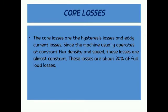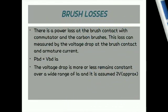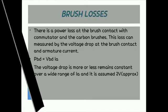Brush losses — there is a power loss at the brush contact with the commutator and the carbon brushes. This loss can be measured by the voltage drop at the brush contact and armature current: Ppd = Vbd × Ia. The voltage drop remains more or less constant over a wide range of speed and is assumed to be approximately 2 volts.